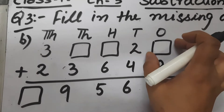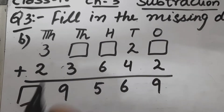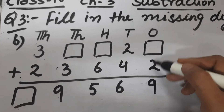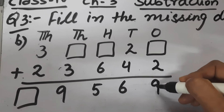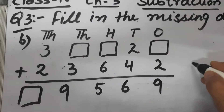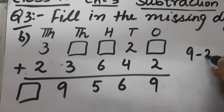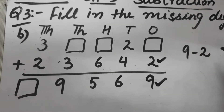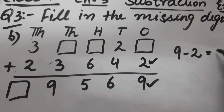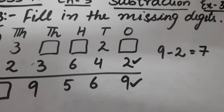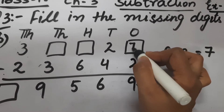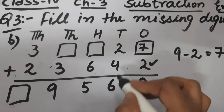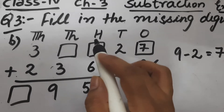In part B, we have to find the missing digits. What should be added to 2 to get 9? We subtract 2 from 9, which gives 7. So here will be 7 — 7 plus 2 is 9. Now 2 plus 4 is 6.